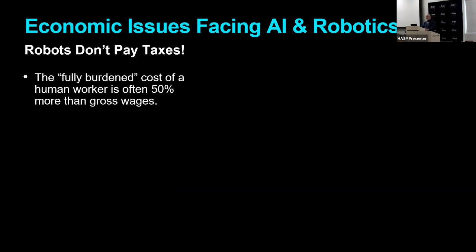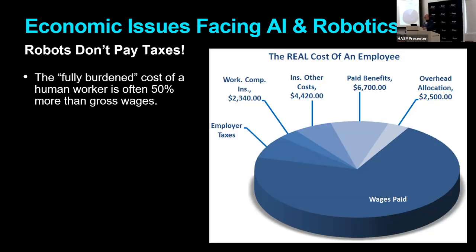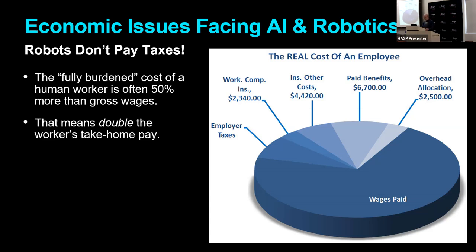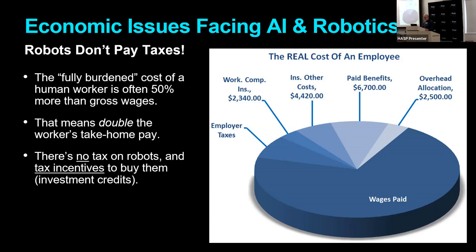When preparing a contract with fully burdened costs — that is, all the costs associated with a worker, not just their wages — the real cost of an employee is often 50% more than their gross wages. This graph is representative of most of the US economy: wages paid are the largest part of employee cost, but all those other taxes and benefits really add up. In fact, often the cost of an employee is double what the employee takes home. But there's no tax on robots, and as I said, there are tax incentives — investment credits — to buy them.